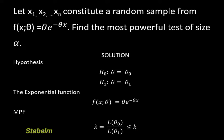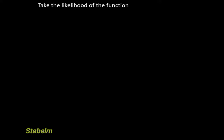The first step, since we have this formula, is to take the likelihood. So we take the likelihood of the function. Taking the likelihood of the exponential function, we get L(θ) = θ^N · e^(−θ · ΣX). This is the likelihood of the exponential distribution.